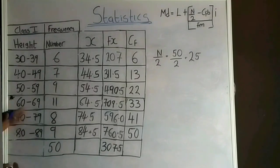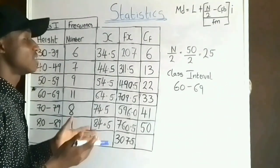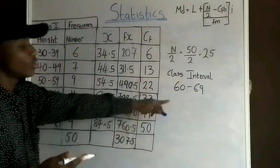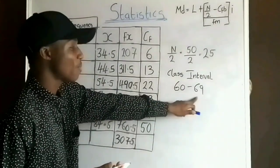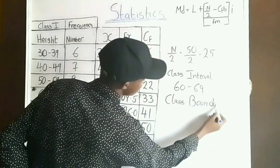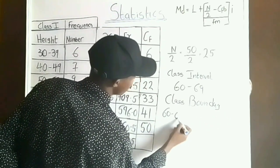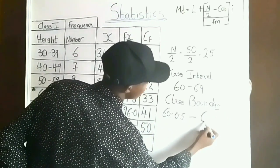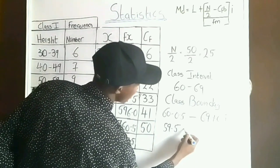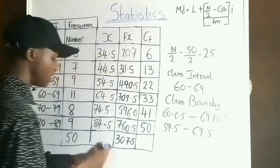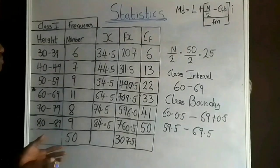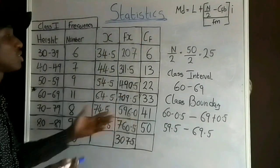After getting the class interval of the median class, I need the class boundary. The class boundary is obtained by subtracting 0.5 from the lower class limit and adding 0.5 to the upper class limit. So the class boundary is 59.5 and 69.5.